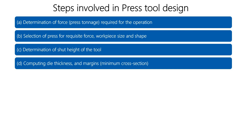The fourth step is computing die thickness and margins, alternatively called minimum cross section. A press tool involves many parts — top plate, bottom plate, stripper plate, die plate, punch, punch back plate, stripper, die back plate, and more. If you want to see all elements of a press tool in detail, you can check via the info button. Computing die thickness means we calculate the shear strength of these plates.